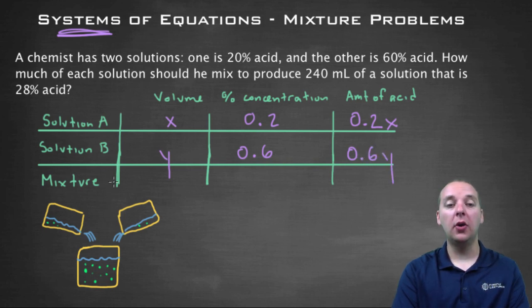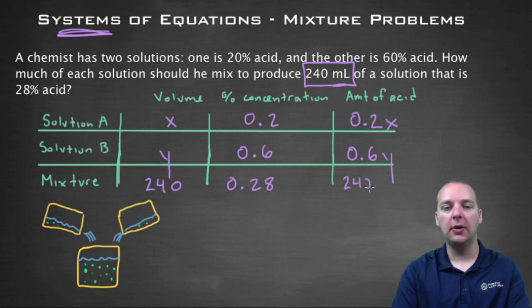And then what about the total mixture? Well I do know a little bit about the volume of the total mixture, that was the 240 milliliters. The concentration for the mixture would be 28%, so 0.28. And the amount of acid, how much would be in your mixture? Well it would be the same as the other two, it would be 240 times 0.28. So here's your table filled out.